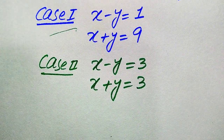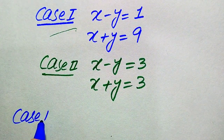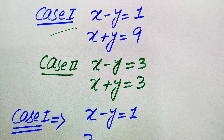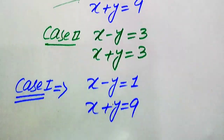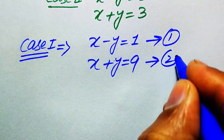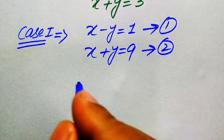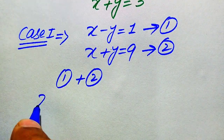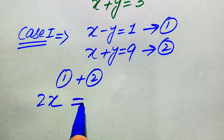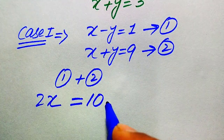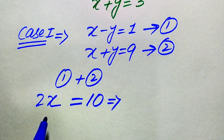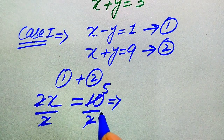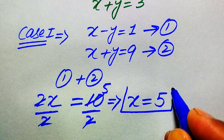Focusing on Case 1: we have equation 1 as x minus y equals 1 and equation 2 as x plus y equals 9. Adding equation 1 and equation 2, the y terms cancel and we get 2x equals 10. Dividing both sides by 2, we get the value of x equals 5.